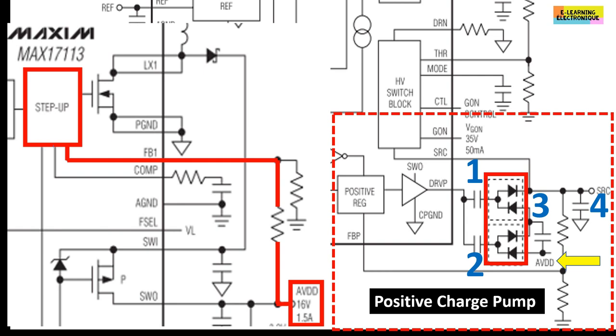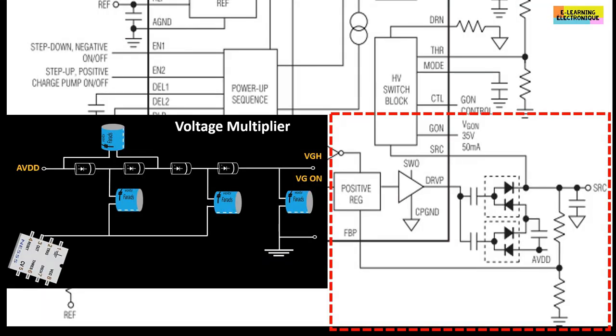To increase the value of the output voltage, the same circuit can be recopied one or more times depending on the desired voltage. By adding diodes and capacitors in this configuration, we increase the value of the output voltage. Hence the other name of this circuit, the voltage multiplier.